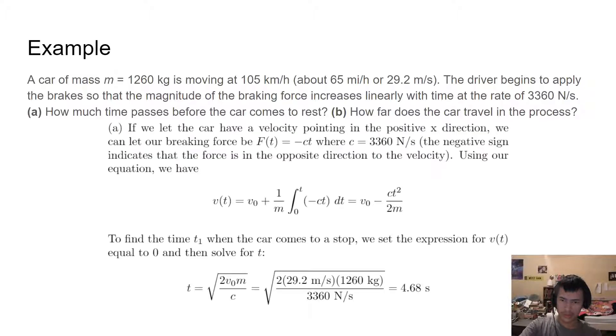This is for part A. If we let our car have a velocity pointing in the positive x direction, then we can let our braking force be f of t equals negative c times t, where c is just 3,360 newtons per second. This negative sign is just there because we want to show that the force is going in the opposite direction as our current velocity, which is just saying we want our force to be taking away from our velocity rather than adding to our velocity.